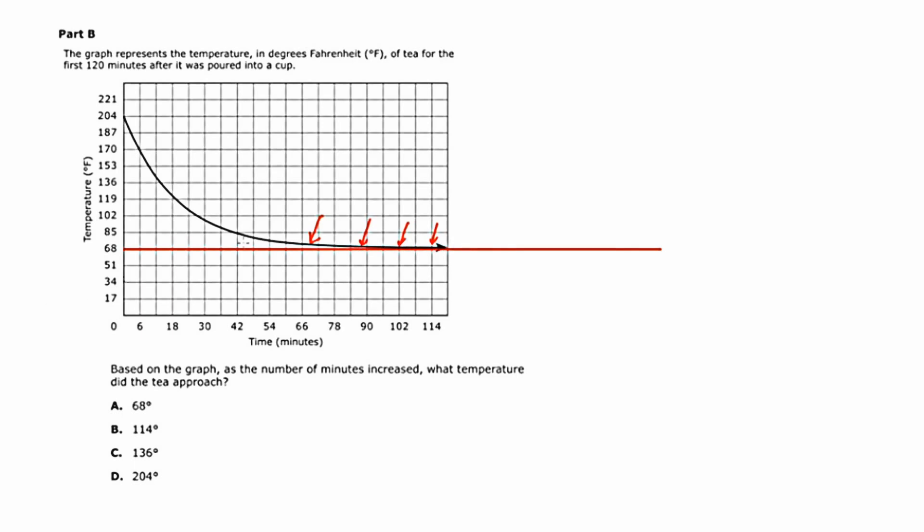So if I were to just anticipate what it might be at 120 minutes, it would probably be over here or over here. We just keep going like this. So for that reason, in the long run, I'm going to say that the temperature will level off at around 68 degrees, which is answer choice A.